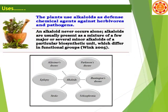The plant uses alkaloids as defense chemical agents against herbivores and pathogens. Alkaloids are usually present as a mixture of a few major or several minor alkaloids of a particular biosynthetic unit differing in functional groups. Pharmacologically, alkaloids are used in different disease conditions like Alzheimer's disease, Parkinson's disease, epilepsy, stroke, and schizophrenia.